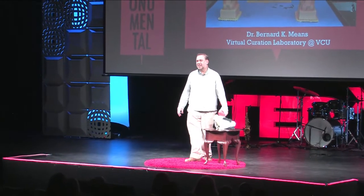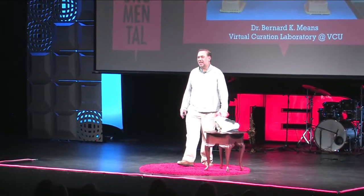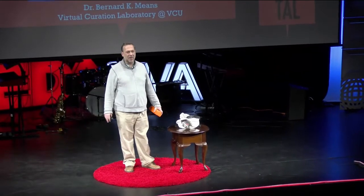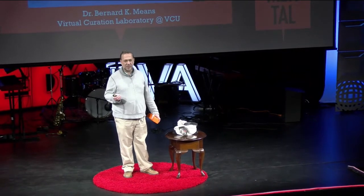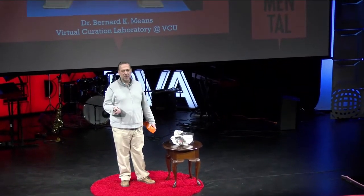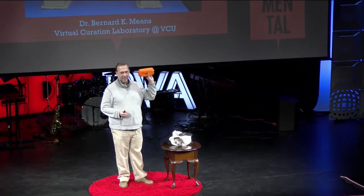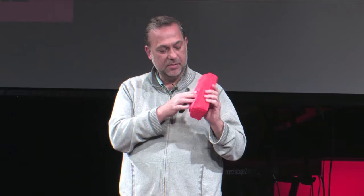I 3D print the past. People ask me why I do that. I do it because I want to tell stories, and I want to help people tell their own stories — even people who aren't with us anymore. Yesterday, I 3D printed this brick. It doesn't really look like much — it's orange right now, it'll eventually be red. But it has the impressions of three fingers from an enslaved person who made this brick for George Mason.